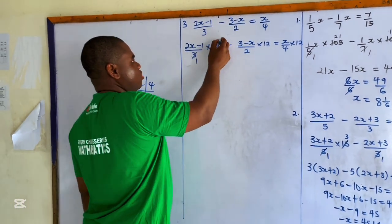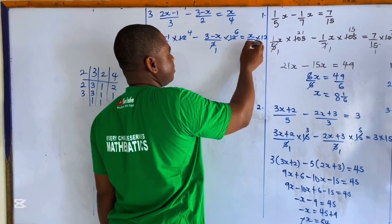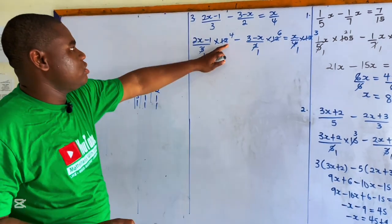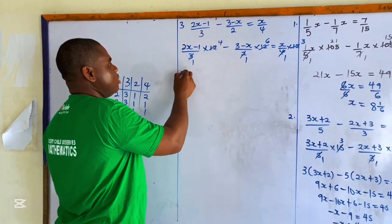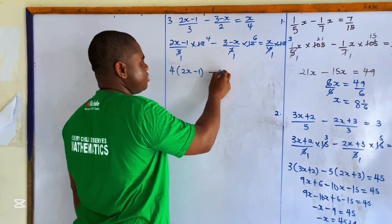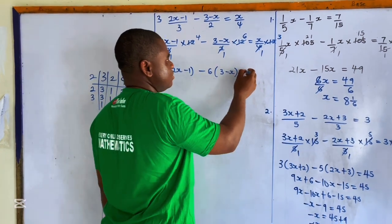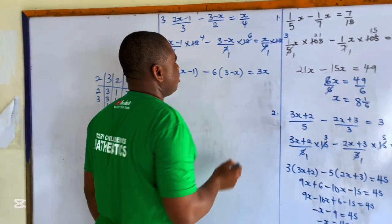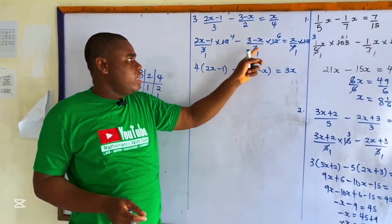Simplifying: 3 goes into 12 four times, 2 goes into 12 six times, and 4 goes into 12 three times. So we get 4 in brackets (2x minus 1), minus 6 in brackets (3 minus x), equals 3x. Remember, the main aim of multiplying through by the LCM is to convert this into a linear equation.